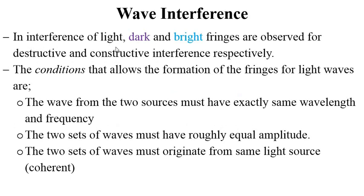In light, when we talk about interference, dark and bright fringes are observed for destructive and constructive interference respectively. When we talk about constructive interference, we talk about bright fringes that will be observed. And for destructive interference, we will get dark fringes observed.